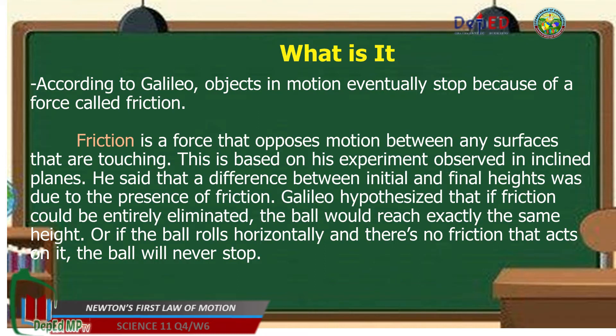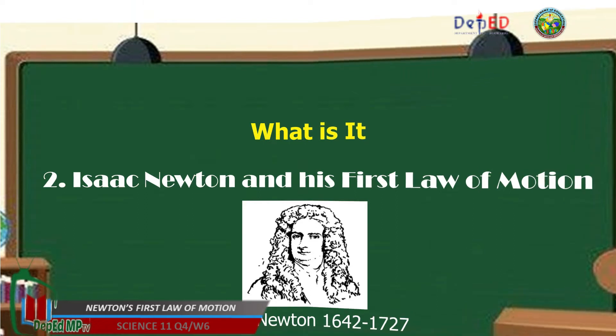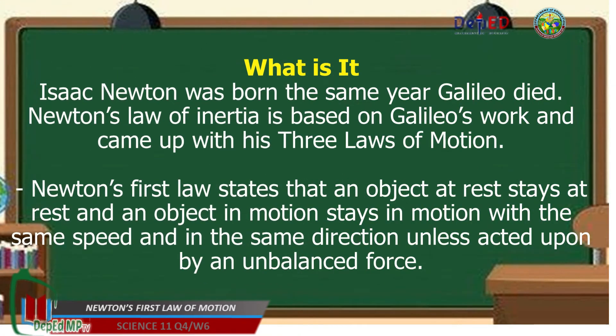He said that the difference between initial and the final height was due to the presence of friction. Galileo hypothesized that if friction could be entirely eliminated, the ball would reach exactly the same height. Or if the ball rolls horizontally and there's no friction that acts on it. This is Isaac Newton, 1642 to 1727. Isaac Newton was born the same year Galileo died. Newton's Law of Inertia is based on Galileo's work and came up with his Three Laws of Motion.